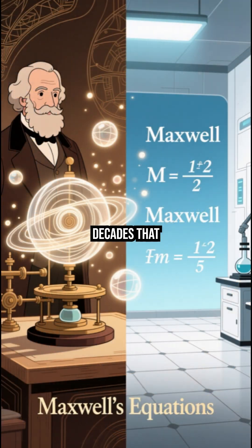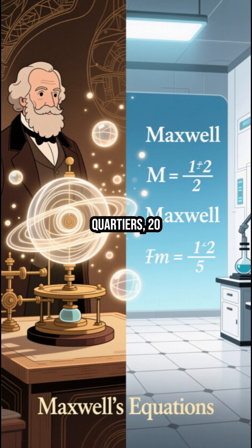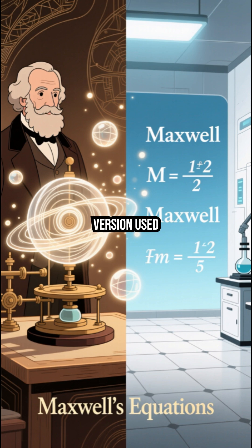But in the decades that followed, his original form — laden with mechanical analogies, quaternions, and 20 equations — and the ether, was gradually simplified by scientists like Oliver Heaviside into the four-vector equation version used today.